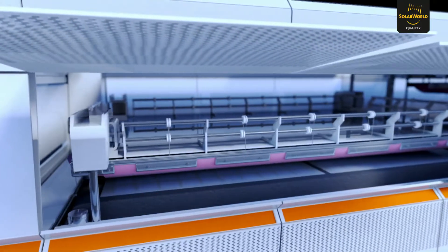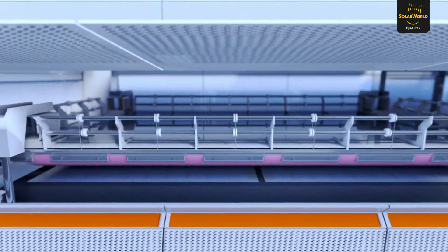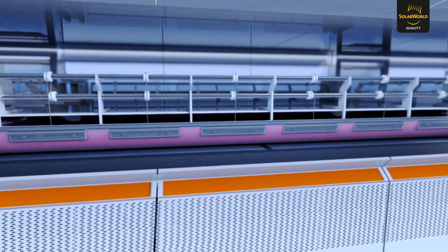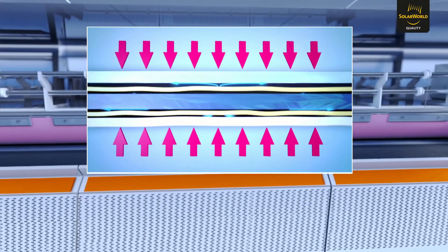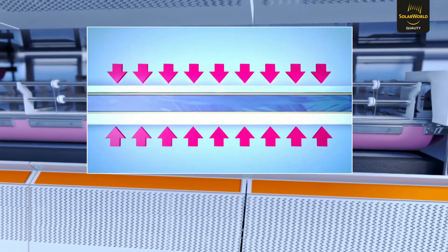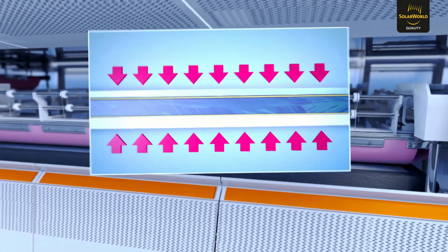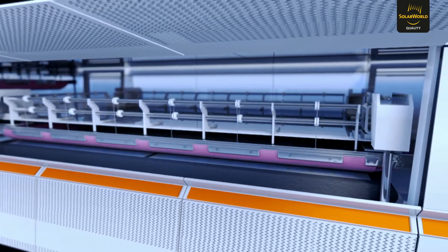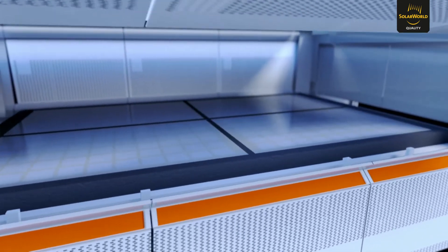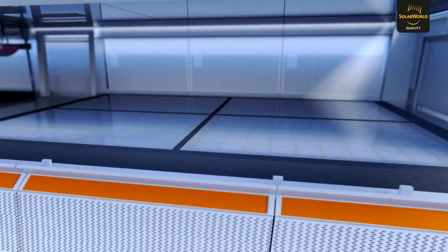Glass, films and cells are warmed to approximately 150 degrees Celsius in a first chamber. A second chamber melts the embedding film layers, while a vacuum removes the remaining air. This creates a bubble-free fused bond. In a third chamber, the laminate cools down again and exits the laminator as a sealed weather and shock-resistant unit.